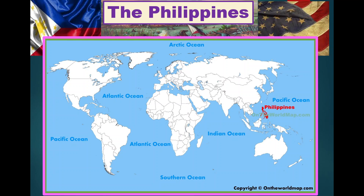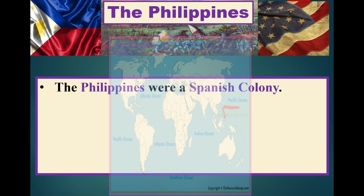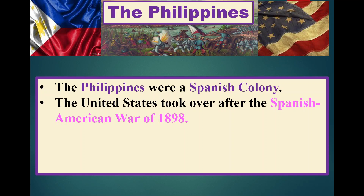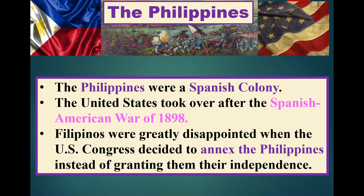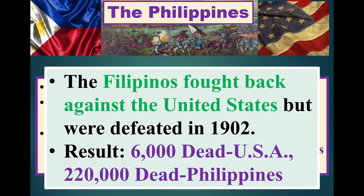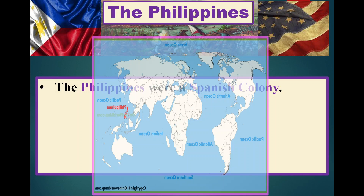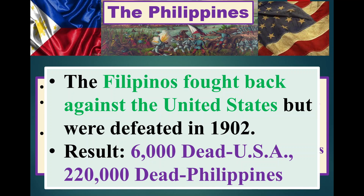Another country the United States receives after the Spanish-American War is the Philippines. The Philippines are a Spanish colony, and the United States takes over after the Spanish-American War of 1898. Filipinos are greatly disappointed when the U.S. Congress decides to annex the Philippines instead of granting them independence. Filipinos fight back, but the United States wins the Philippine-American War and turns the Philippines into another protectorate colony.